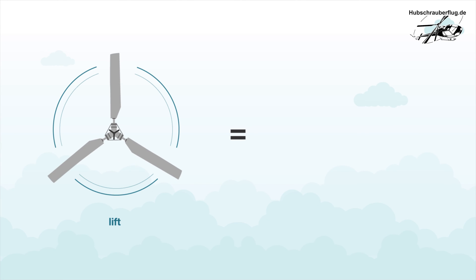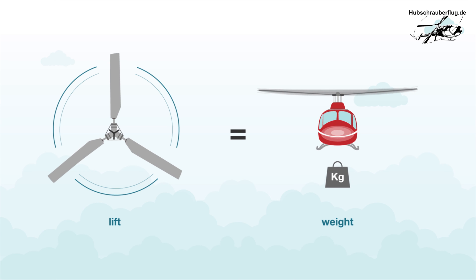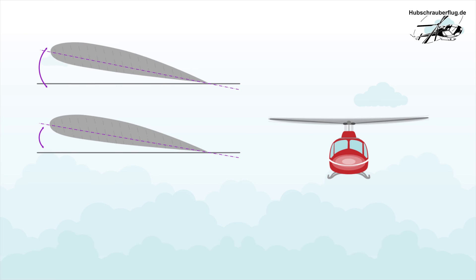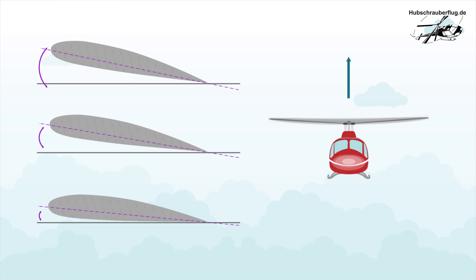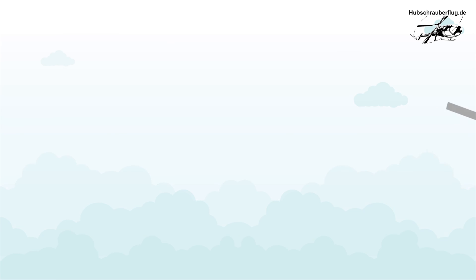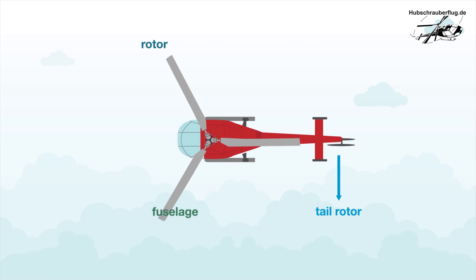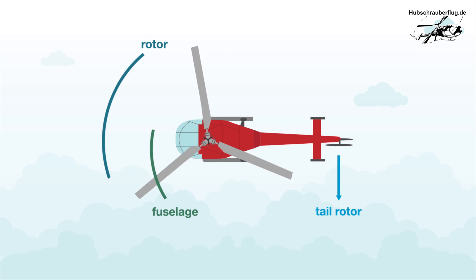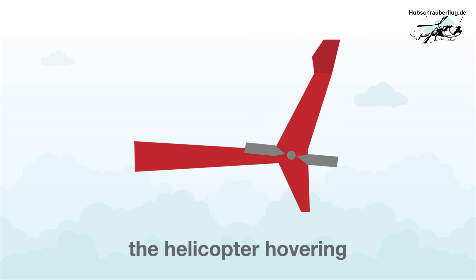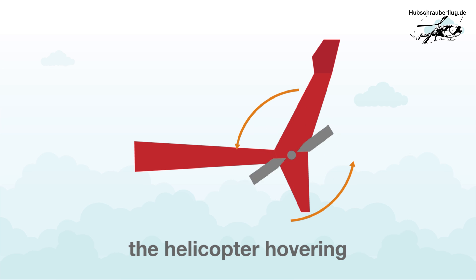To this end, lift must be exactly equivalent to the weight of the helicopter. Increasing the angle of attack increases lift and the helicopter begins to climb, while decreasing the angle of attack causes the helicopter to descend. To prevent the fuselage of the helicopter from moving against the rotational direction of the rotor, most models feature a vertically rotating tail rotor that compensates for this torque.